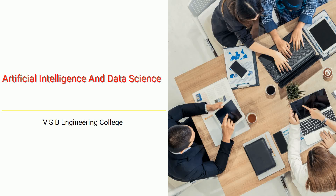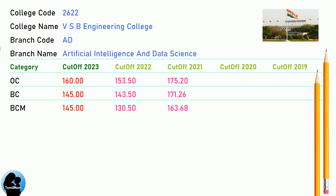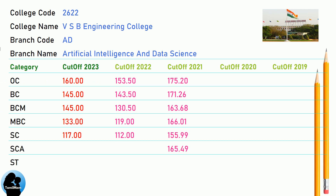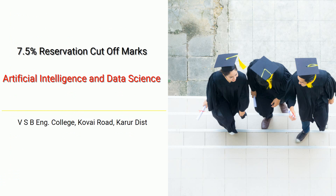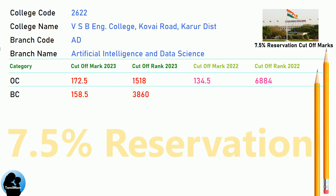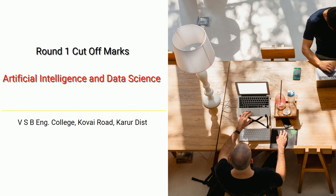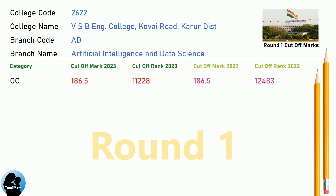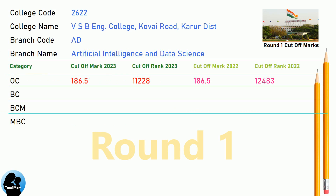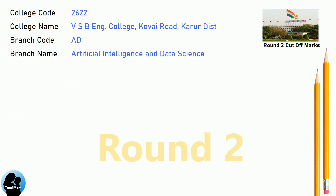DNA Cut-Off for VSB Engineering College in Artificial Intelligence and Data Science. DNA 7.5 Reservation Cut-Off for VSB Engineering College in Artificial Intelligence and Data Science. DNA Round 1 Cut-Off for VSB Engineering College in Artificial Intelligence and Data Science. DNA Round 2 Cut-Off for VSB Engineering College in Artificial Intelligence and Data Science.